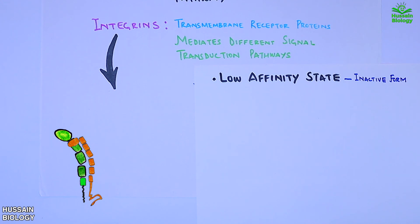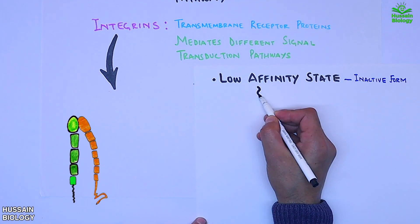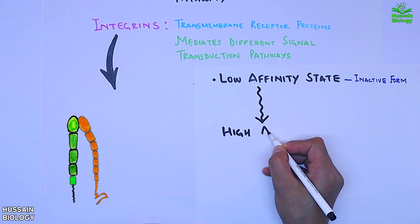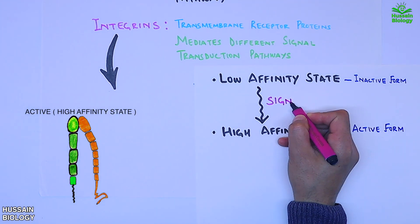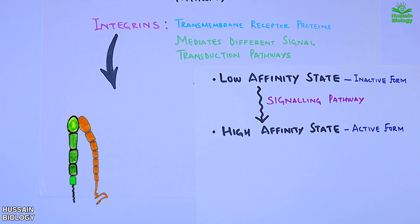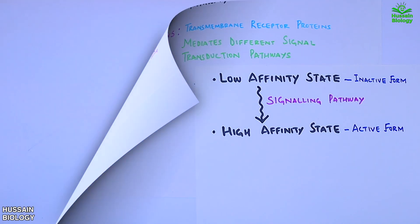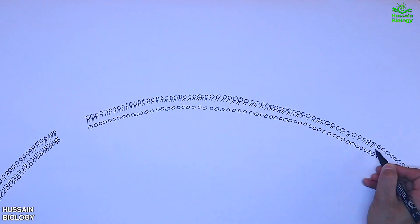But when we have inside-out signal transduction within the cell through the cytoplasmic tail of integrin molecule, the conformation is changed and we get the open activated form of integrin molecule as shown in the diagram. This being the high affinity state of integrin molecule can now mediate several cellular signaling pathways. Now let's get into the signaling pathway directly.